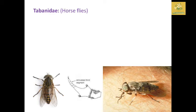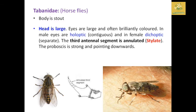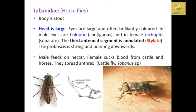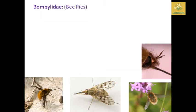Tabanidae comprises horse flies. The body is stout, the head is large, and the eyes are large and often brilliantly colored. In males they are holoptic; in females they are dichoptic. The third antennal segment is annulated, forming a stylate antenna. The proboscis is strong and pointed downwards. Males feed on nectar; females suck blood from cattle and horses. They spread anthrax disease in cattle.